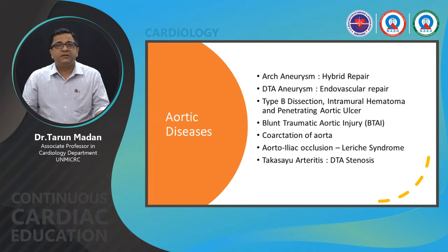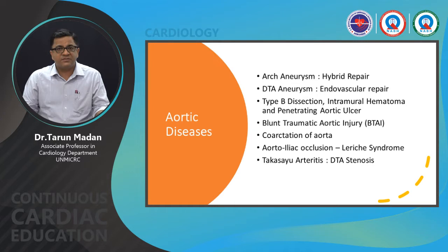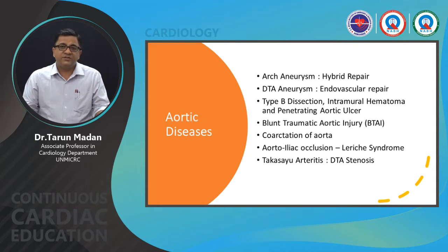Blunt traumatic aortic injury occurs when a head-on collision causes the spine to jerk forward, leading to partial or complete transaction of the thoracic aorta. Congenital heart disease such as coarctation of the aorta, atherosclerotic aorta, and Takayasu disease or non-specific aortoarteritis presenting with stenosis or aneurysms are other disease entities.